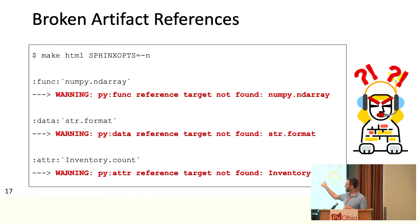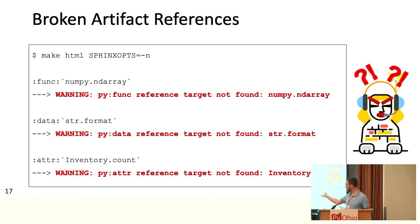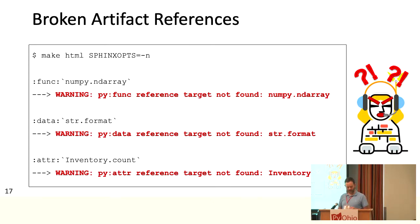By default, when you build, Sphinx doesn't tell you that you've constructed these incorrectly. You have to pass it the nitpicky option — the dash-n flag using the Linux make command — and then it'll tell you: 'Warning, you had this cross-reference in here but I couldn't find it.' So numpy.ndarray, string.format, inventory.count — that last one is from the SvabjInv project — all of these cross-references I intentionally misconfigured to reveal these errors. But it doesn't tell you how you've gotten it wrong, because Sphinx doesn't know. It's not able to tell you how to fix it.